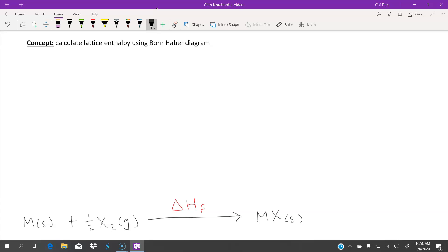First, we can see the metal is in solid form and it needs to be in gaseous form to be able to react. This step takes the enthalpy of atomization of the metal.